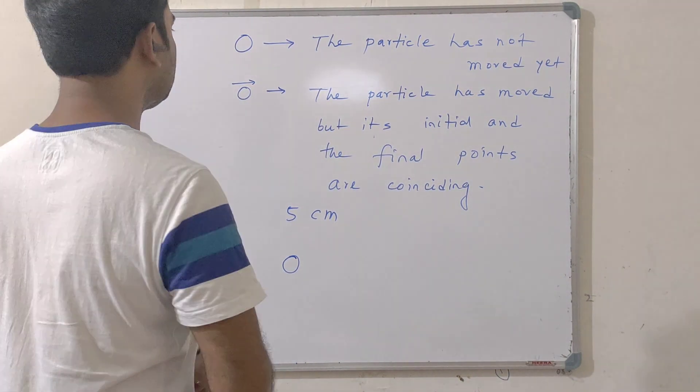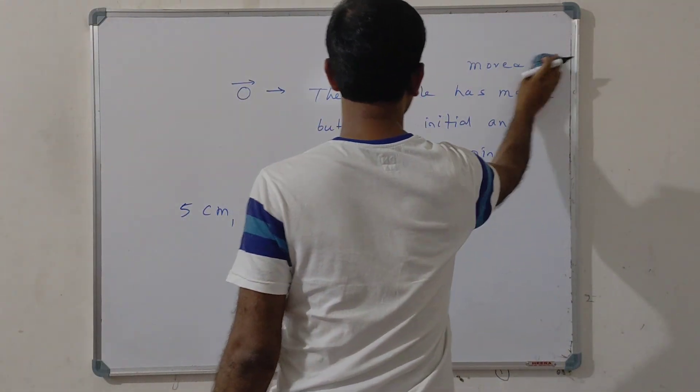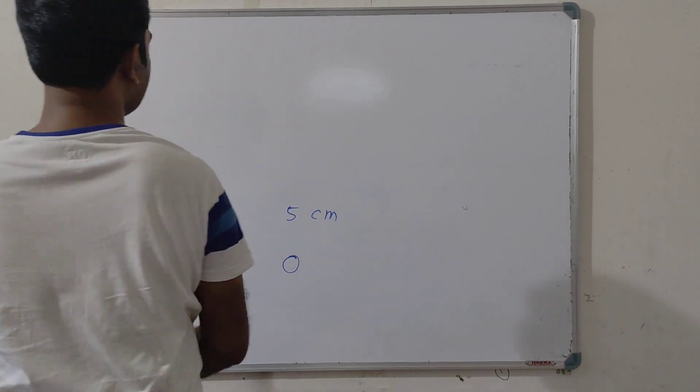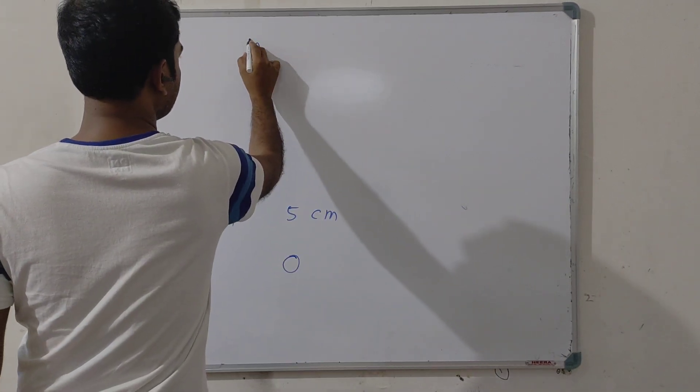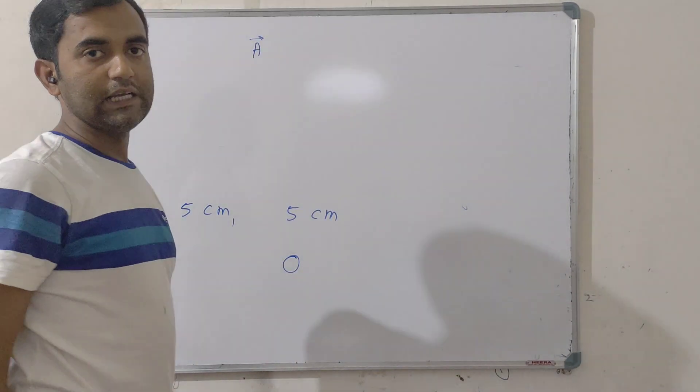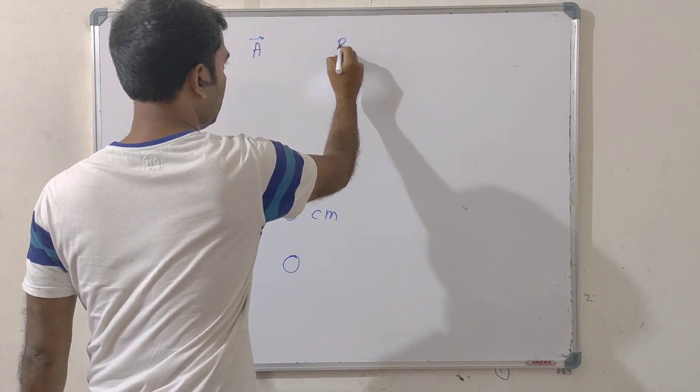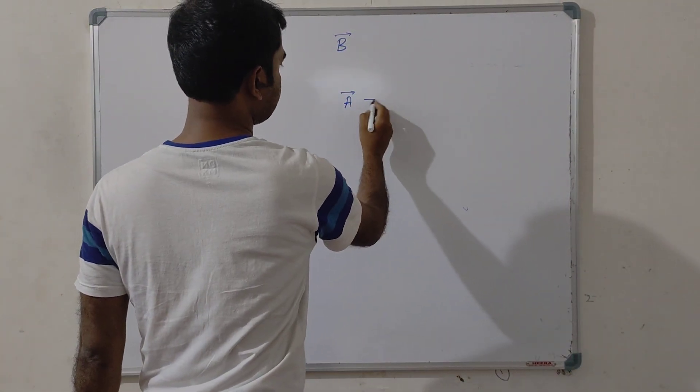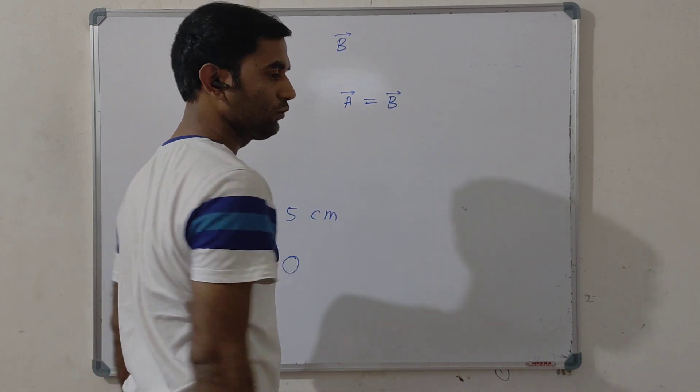Now, we consider two vectors. One is A vector and another one is B vector. We are also considering that they are equal vectors. That is A vector is equal to B vector.